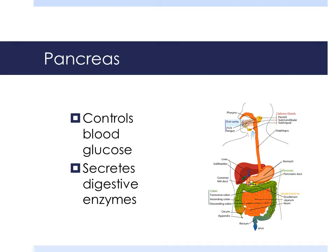The pancreas is located in the abdominal cavity. There are two major functions of the pancreas: it secretes digestive enzymes, and it regulates blood glucose through the secretion of insulin, which decreases blood sugar, and glucagon, which increases blood sugar. Again, here's an example of homeostasis — our body keeping everything in balance. The liver stores glucagon and helps determine glucose levels.